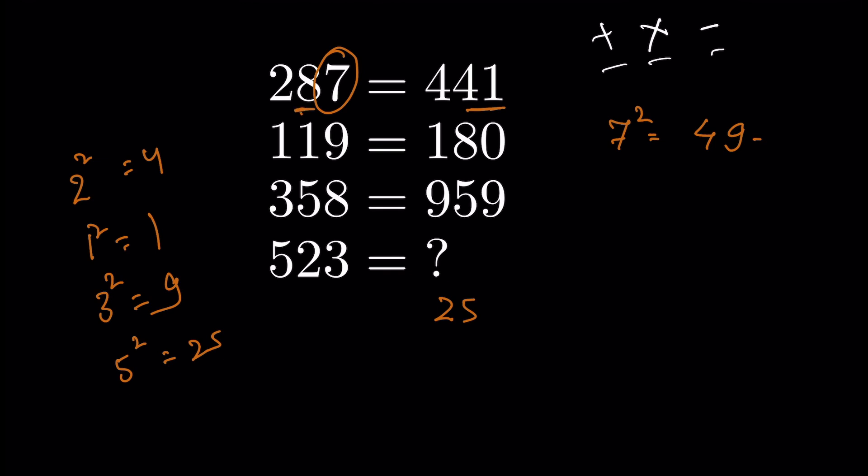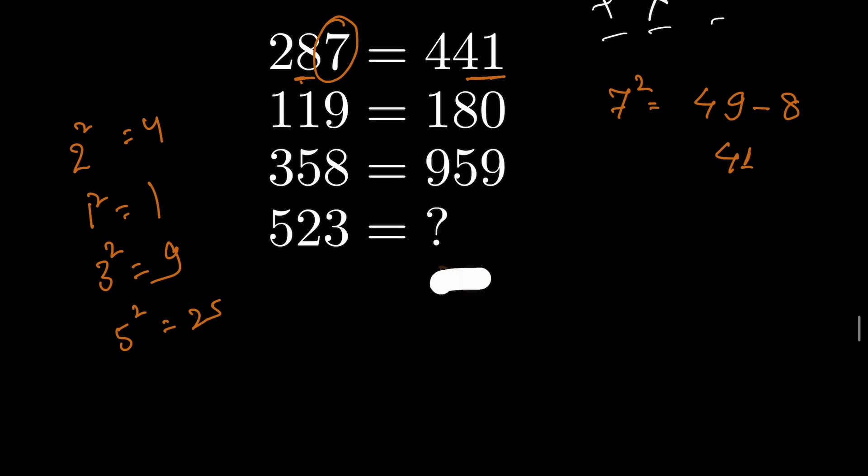The first step is square of first digit. This is the first step, no doubt in that, because the pattern matches. The second step is not the square of second digit, but the square of third digit.